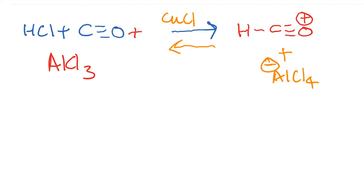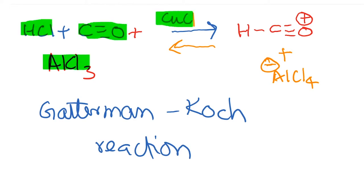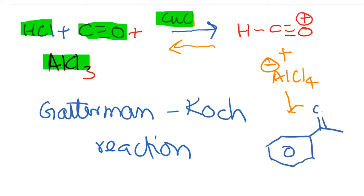These conditions correspond to what is known as the Gatterman-Koch reaction. The Gatterman-Koch reaction is the reaction of benzene with HCl, carbon monoxide, and aluminum chloride in the presence of copper chloride, and the product formed is the formylated benzene — which is benzaldehyde. The Gatterman-Koch reaction is actually a modified Friedel-Crafts reaction and it produces aldehydes on aromatic compounds.